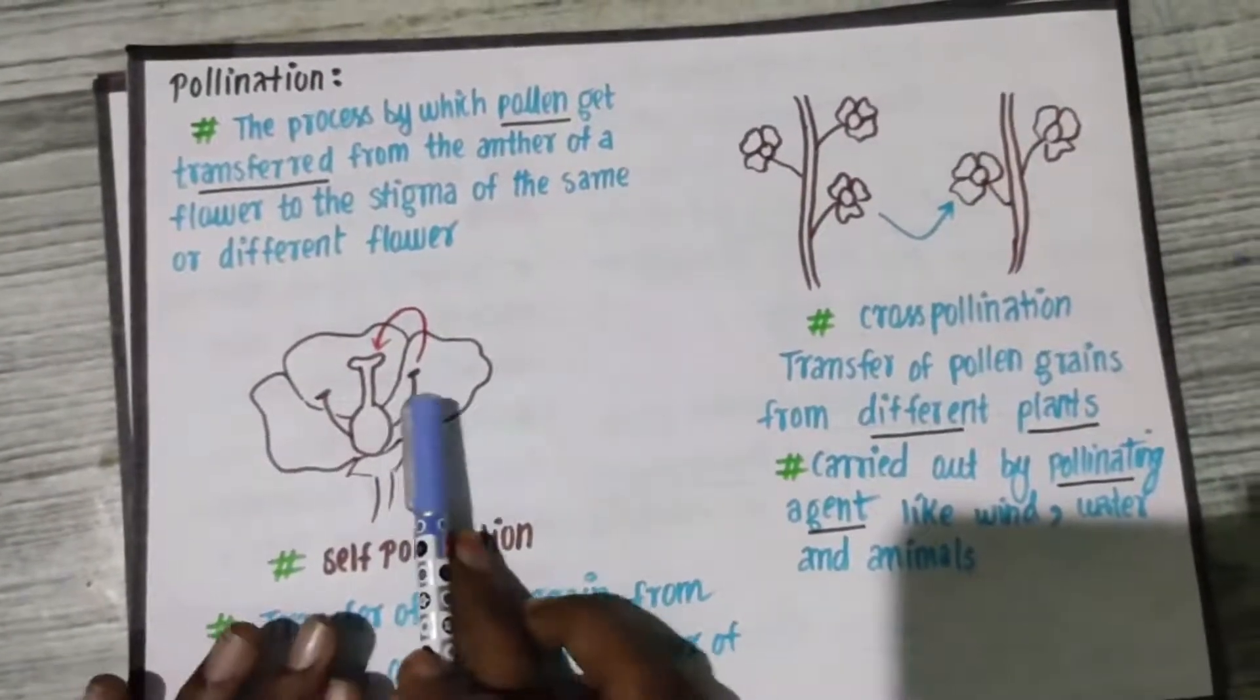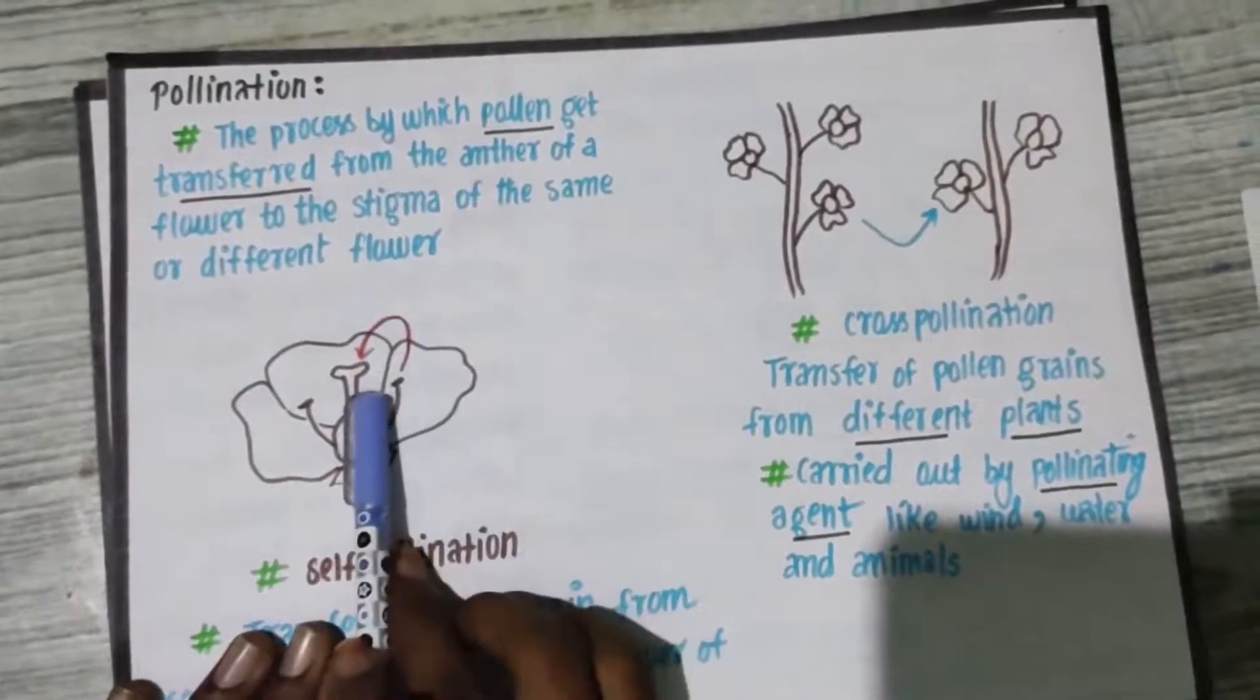Pollination is the process by which pollen grains from anther reaches the stigma.